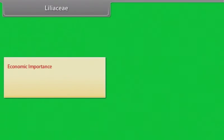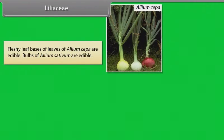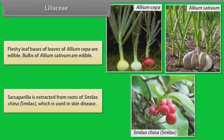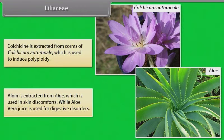Economic importance of Liliaceae: many plants are good ornamentals — for example Tulipa, Gloriosa, Lilium, Aloe, Ruscus, Asparagus, Yucca, Dracaena. Fleshy leaf bases of Allium cepa (onion) are edible; bulbs of Allium sativum (garlic) are edible. Sarsaparilla is extracted from roots of Smilax, used in skin disease. Colchicine is extracted from corms of Colchicum autumnale, used to induce polyploidy. Aloin is extracted from Aloe, used in skin discomforts, while aloe vera juice is used for digestive disorders.